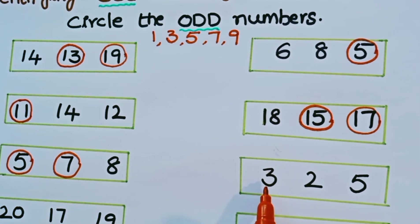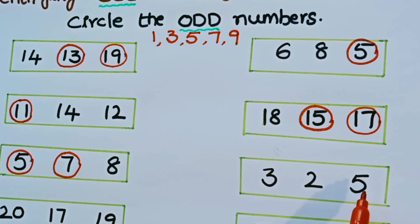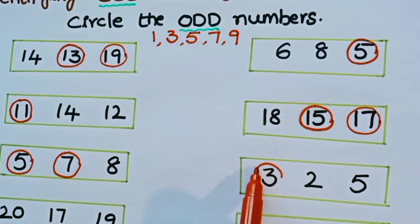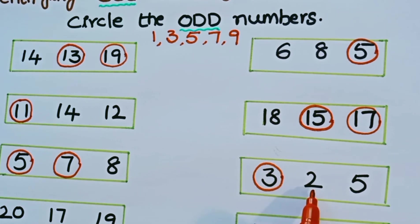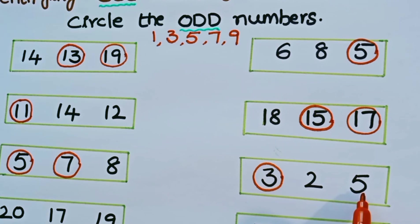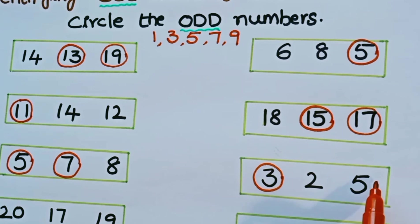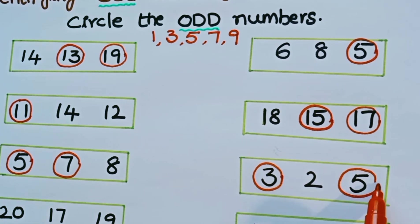What are the numbers in the next row? 3, 2, 5. What are the odd numbers? Is 3 odd or even? It is an odd number, so let us circle 3. Is 2 even or odd? It is an even number. Is 5 odd or even? It is an odd number, so let us circle 5.